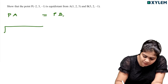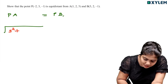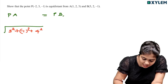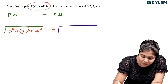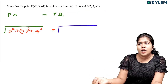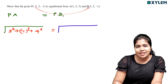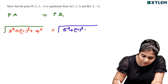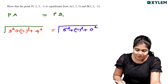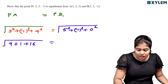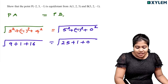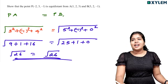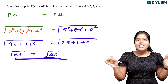Continuing: PA = root of (3)² + (−1)² + (4)² = root of 9 + 1 + 16 = root of 26. Now PB = root of (3−(−2))² + (2−3)² + (−1−(−1))² = root of 5² + (−1)² + 0² = root of 25 + 1 + 0 = root of 26. Since PA = PB = root of 26, it is verified that P is equidistant from A and B.